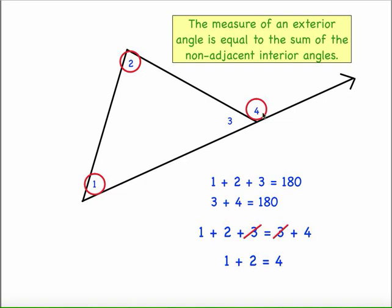the measure of the exterior angle is equal to the sum of the non-adjacent interior angles. Remember three and four, since they share a vertex and a side are called adjacent. One and two are the non-adjacent angles. If I add the measures of angle one and two, it's going to equal the measure of angle four every time.